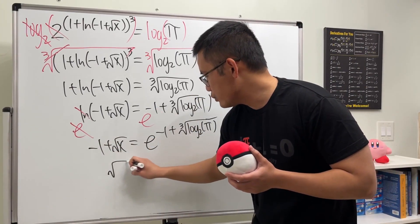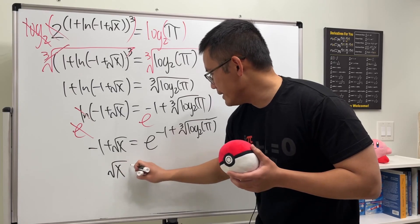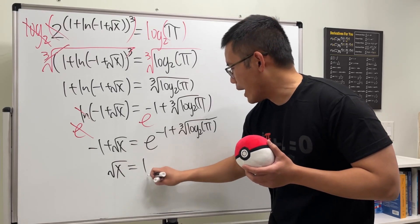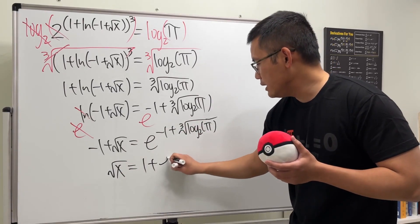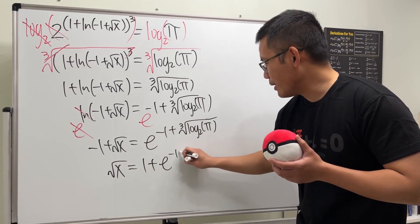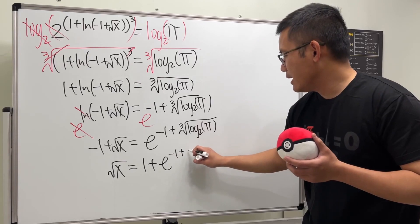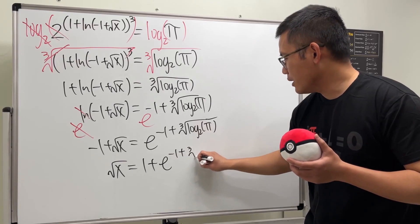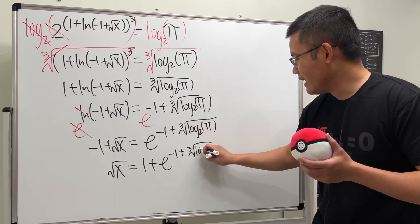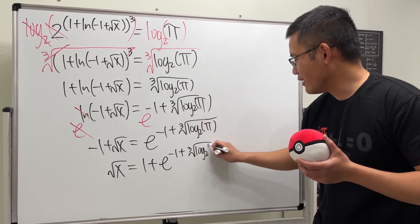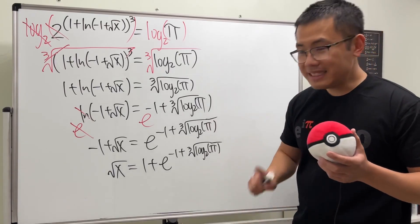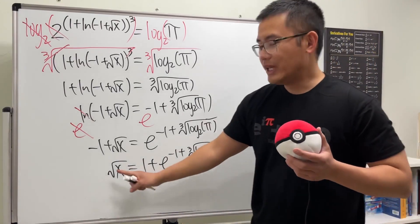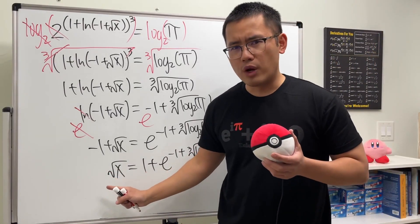Move the negative one to the other side; it becomes positive one. So we have the square root of x equal to one plus e to the quantity negative one plus the cube root of log base 2 of pi.